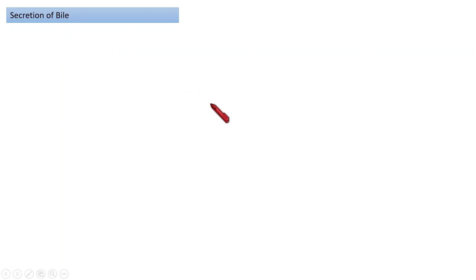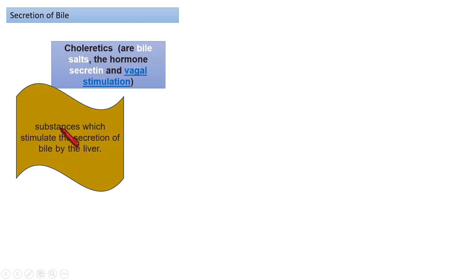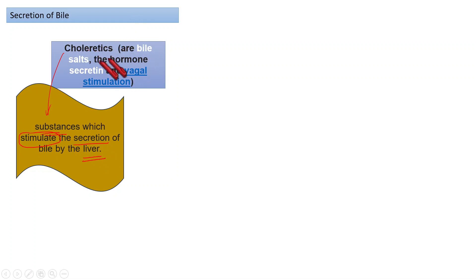Regarding the secretion of bile, we need to familiarize ourselves with two terms. First is choleretics — these are certain substances that stimulate the liver to secrete bile. Examples of choleretics include the bile salts themselves, the secretin hormone, and vagal stimulation.